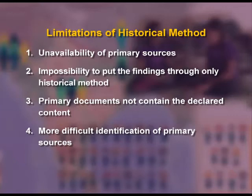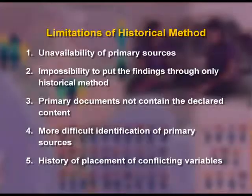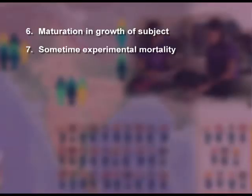Fourth, more difficult identification of primary sources — the title of collected materials does not correspond with its contents. Fifth, history of placement of conflicting variables — conflicting variables other than the independent variable are found outside of the subject and study but within the social environment. Sixth, maturation in growth of the subject — change occurs in biology or psychology of the subject due to passage of time during the study. Seventh, experimental mortality — attrition or dropout of subjects sometimes occurs during the course of study.